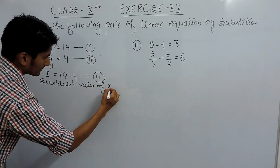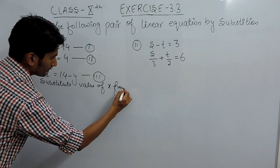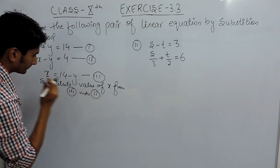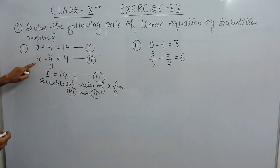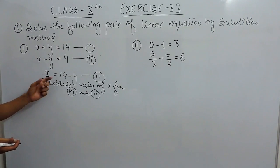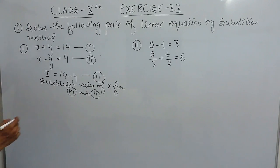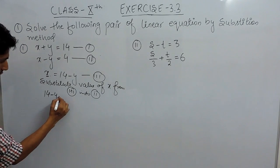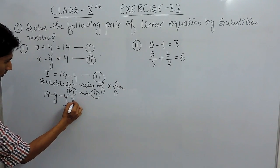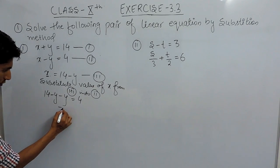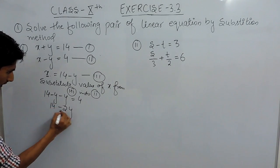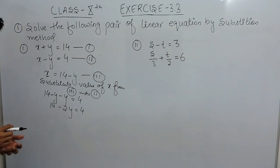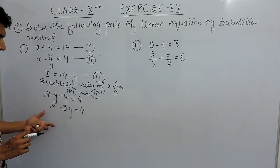Substitution means we replace x with this expression. So instead of x, we write 14 minus y, and there is already a y term. So minus minus becomes plus, giving us minus 2y. This simplifies to 14 minus 4. We know how to solve this kind of linear equation — shift all constants to one side and all variables to the other side.